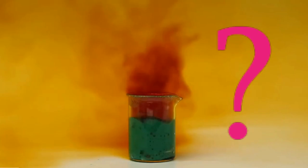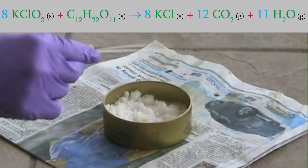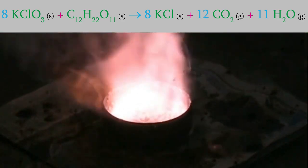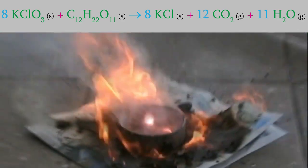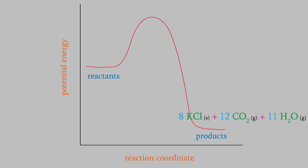For example, you may have seen this reaction before, in which solid sucrose and potassium chlorate react to form potassium chloride, CO2, and water vapor. This is a very exothermic reaction, so the enthalpy of the products is lower than that of the reactants, which is a favorable situation. That gives us good reason to suspect that this reaction might be spontaneous, meaning that we don't need to put any energy into the system in order to make the reaction happen.